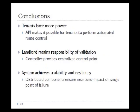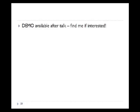In conclusion, the BGP-Sharp architecture allows tenants to have more power to control their own routes through an application programming interface. At the same time, the landlord retains responsibility for validation and determining whether announced routes can propagate to upstream routers. The system achieves scalability and resiliency through distributed and redundant components. There is also a live demo available — please find me after the talk if you're interested.